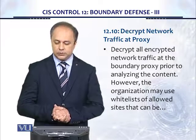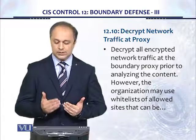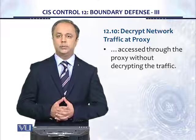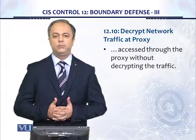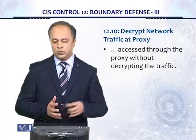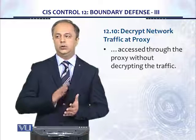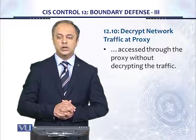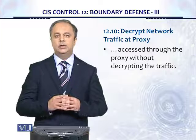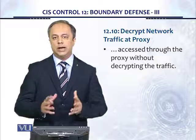12.10 tells us to decrypt network traffic at the proxy. Decrypt all encrypted network traffic at the boundary proxy prior to analyzing the content. However, the organization may use whitelists of allowed sites that can be accessed through the proxy without decrypting the traffic. If there is encrypted traffic coming in or going out, it needs to be decrypted at the proxy before analysis. If traffic needs to go to an allowed external website encrypted, that can be entered in a whitelist. This is the intelligent Layer 7 application layer traffic proxy that helps perform security functions applicable at that layer of the OSI model.